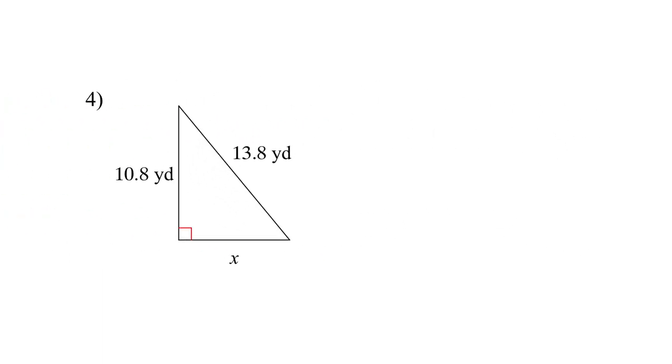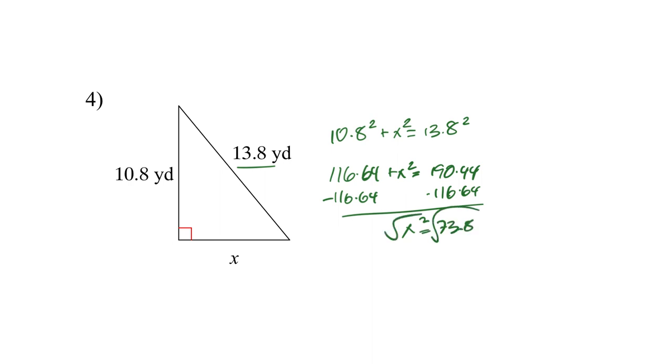Number 4. Again, my hypotenuse is 13.8. So 10.8 squared plus X squared equals 13.8 squared. So by going to the calculator, I got that this is 116.64 plus X squared equals 190.44. Minus 116.64 on both sides. X squared equals 73.8. Then the square root on both sides. I got that X equals 8.6.